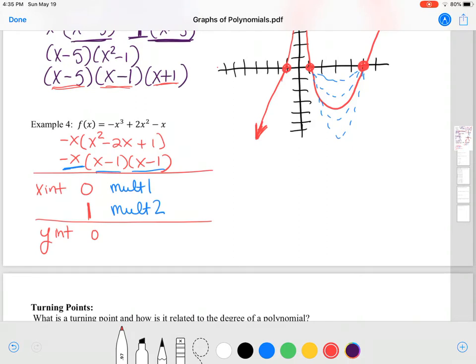Okay, in my end behavior, if I look at my degree, my degree is 3 and that's an odd degree. And I have a leading coefficient that's negative, so when I draw this I'm going to have arrows in the fourth and the second quadrant.